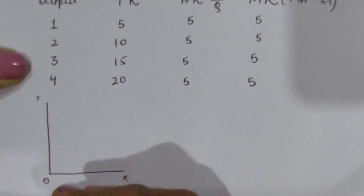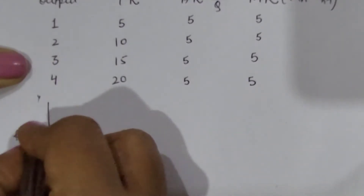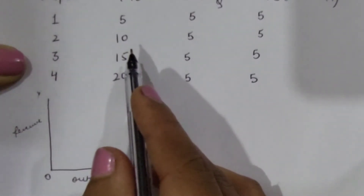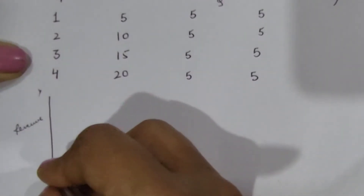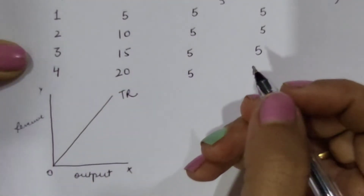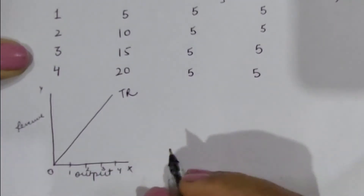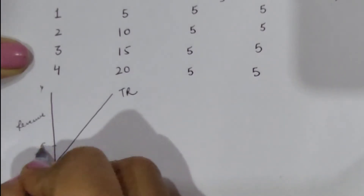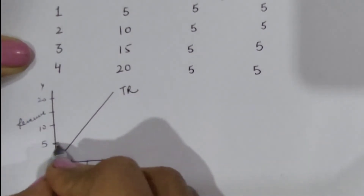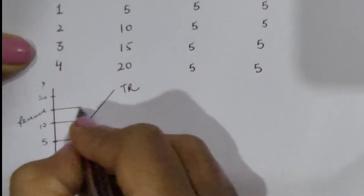Diagrammatically, on the x-axis we are taking output and on the y-axis revenue is shown. If we take into consideration the total revenue, then the total revenue curve will increase at a constant rate. If we sell one, two, three, or four units of output, revenue would be 5, 10, 15, and 20 — it increases at a constant rate.